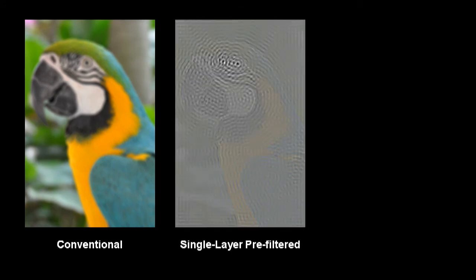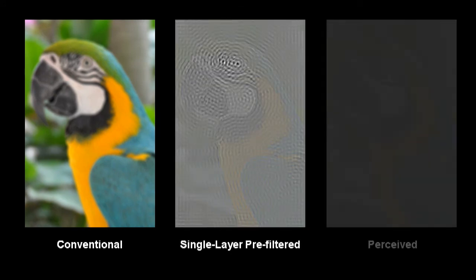We show three simulated results with natural images. Here is the original image, the blurred image seen by the viewer, the pre-filtered image displayed on the screen, and the perceived image.